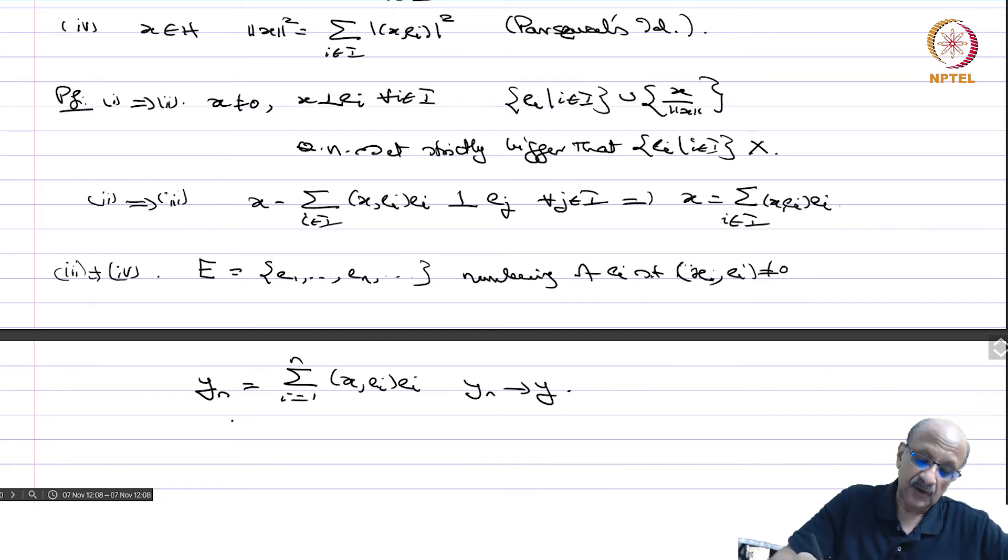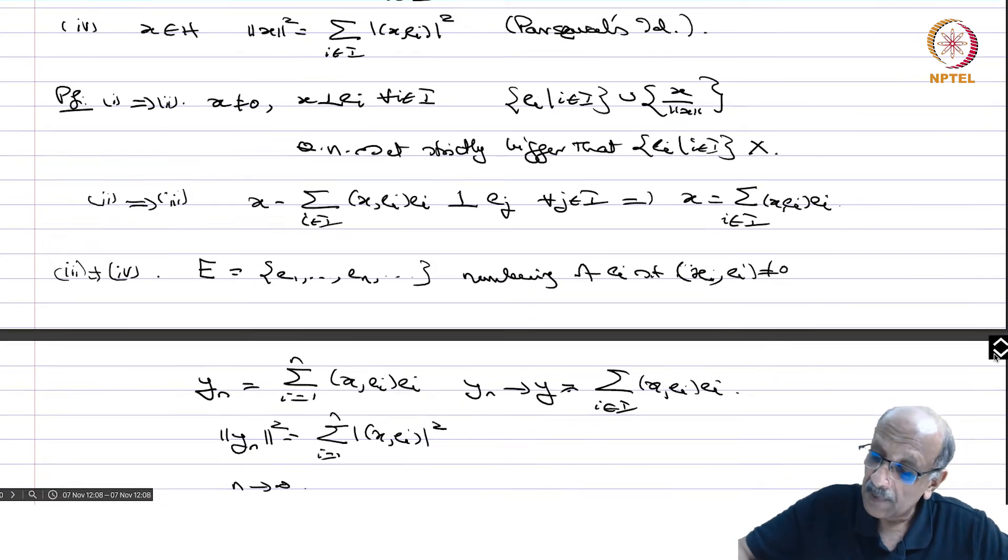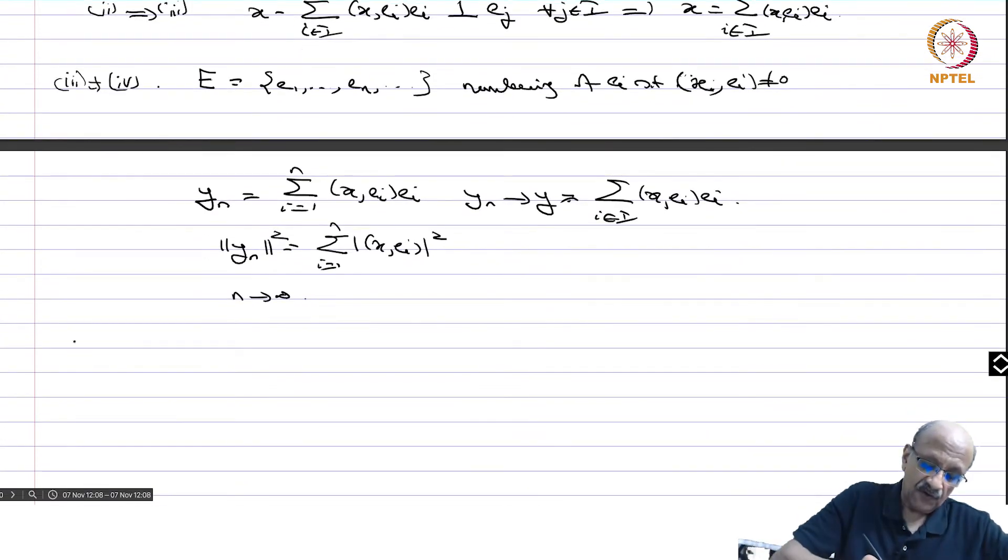Then YN converges to Y in H, which is equal to sigma i in I, x EI, that is how we define this sum. So norm YN square if you take, that is nothing but there are no cross terms because EI, EJ when I is not J is 0. So this is sigma i equals 1 to N mod x EI square. Now let N tend to infinity and we get 4. This proves the Parseval identity.